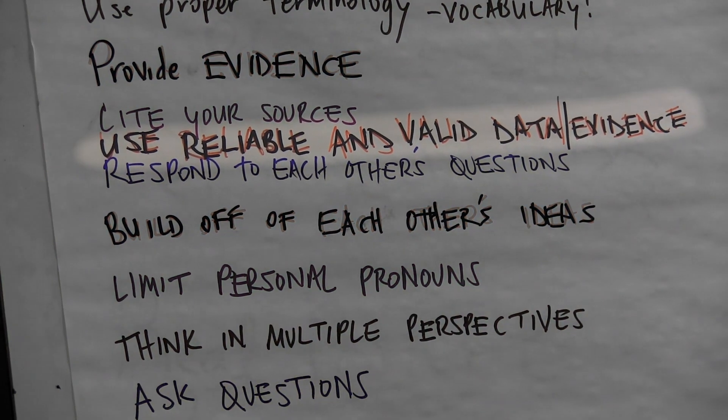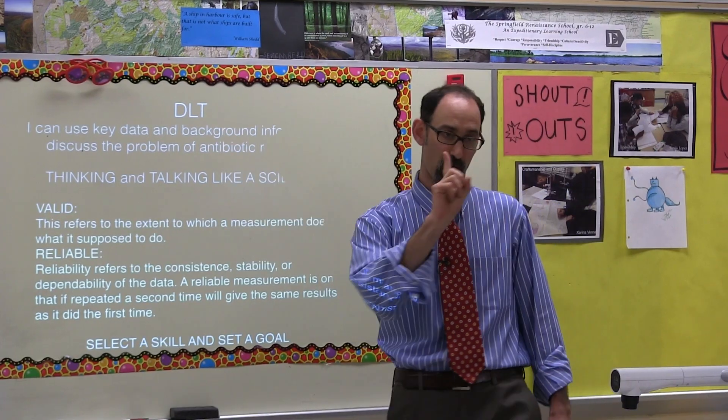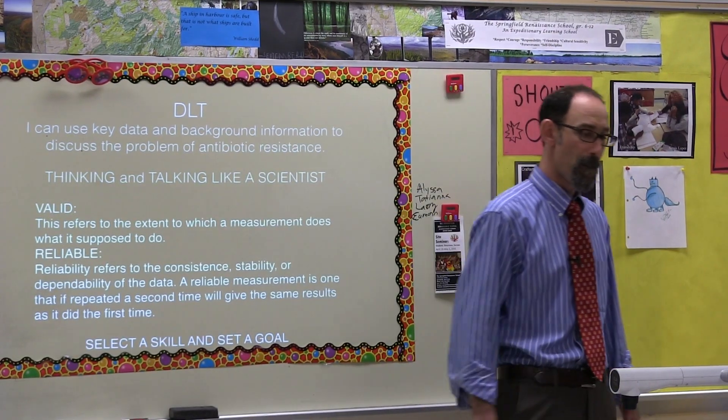Deja, what do you think? Why is it reliable to show data over and over again, and not as reliable to show it once? If you show it once, it could have been just a fluke. But if you have it multiple times, it shows that it's a consistent thing that's happening.